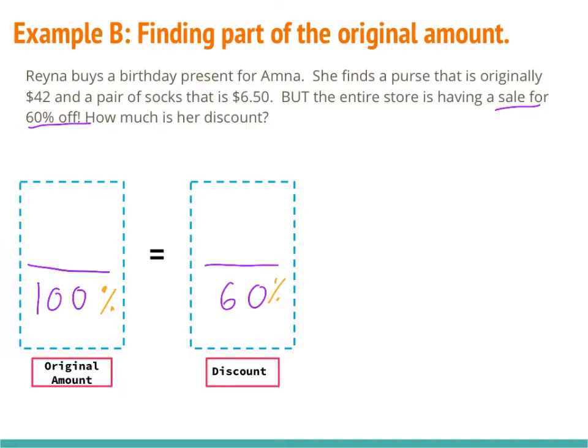There's an issue here: Raina is buying two things — a $40 purse and a $6.50 pair of socks. When you go to the store, you're not going to buy one thing, get the discount, then come back for the next item. You take everything to the register at once and they add them together. So we need to add $42 and $6.50 to get $48.50, and that's the 100% — the total cost of everything being purchased.